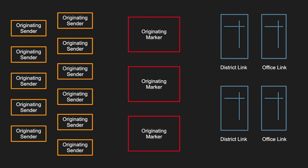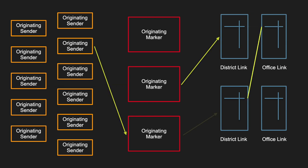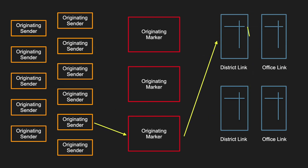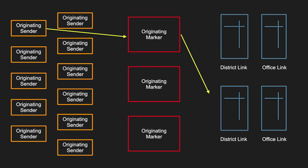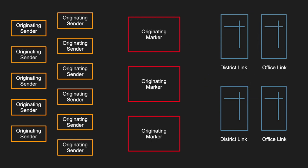The marker's second job is to set up the crossbar switches themselves to establish a path to the outgoing trunks located on the office link frames. These outgoing trunks lead to the central office where our call will complete — they can be in the same building or miles away. If we take our simple example and make it look a bit more like a real number one crossbar, you might have about 100 senders talking to perhaps three markers, connecting calls through the switch fabric, all happening concurrently.